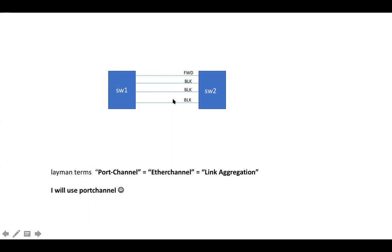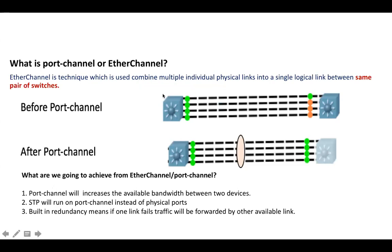We were looking for a solution which can provide a mechanism so we can utilize all available physical links. So we came up with port channel, which is also known as EtherChannel, and other vendors call it link aggregation. Port channel is a mechanism to combine multiple physical links into a single logical interface between two switches.